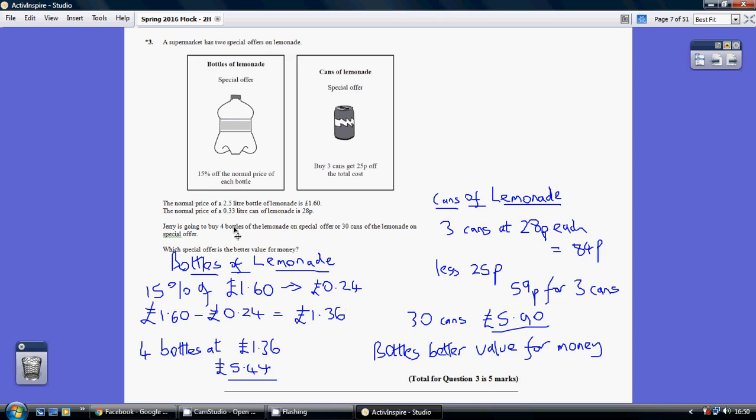Taking this off the cost of a bottle, we see that a bottle of lemonade after the 15% reduction is £1.36. Now we're having four of these bottles, so four lots of £1.36 is £5.44. That's as far as we go with bottles of